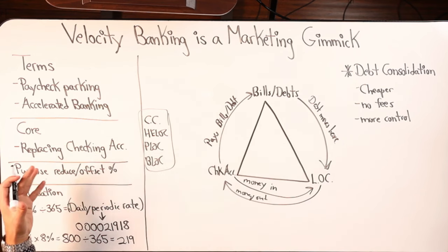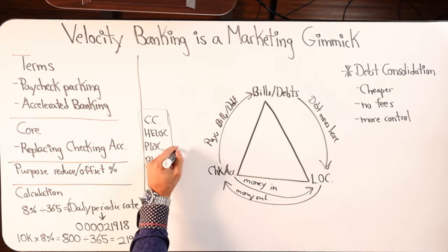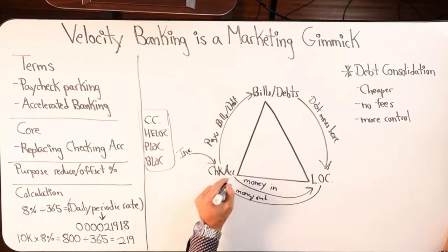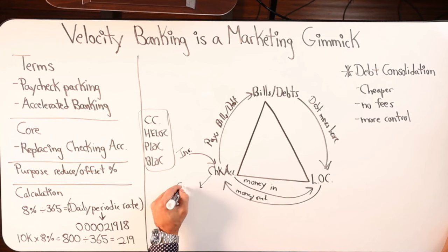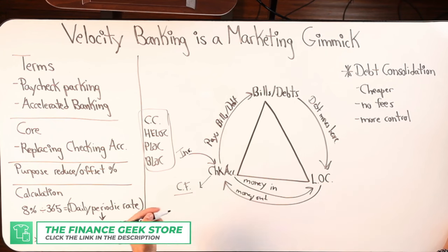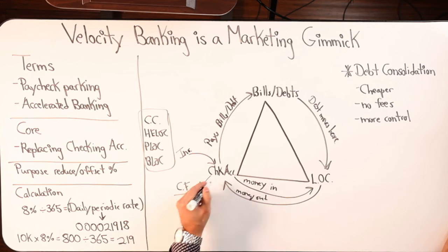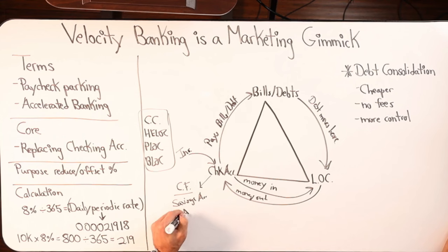What does a checking account do for us? It's where money comes in. Income that you and I generate has to land somewhere — for all of us it lands in a checking account. That money sits in the checking account, pays bills, pays debts, and what's left over after bills and debts are paid is cash flow. That cash flow might get moved into a savings account, a brokerage account, a money market, or a CD.